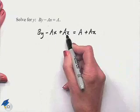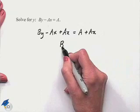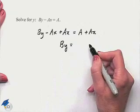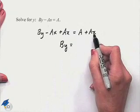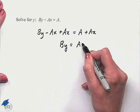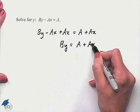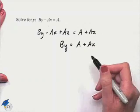On the left hand side, these are subtracting out, leaving us with b times y. On the right hand side, we're not able to put these two terms together. We have to leave them in the present format because they are unlike terms.